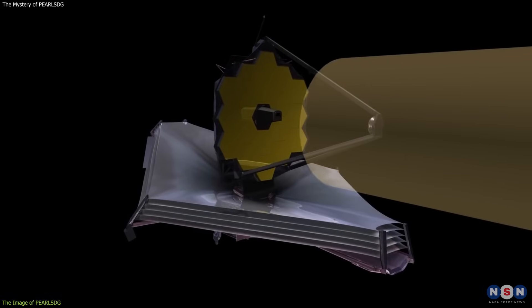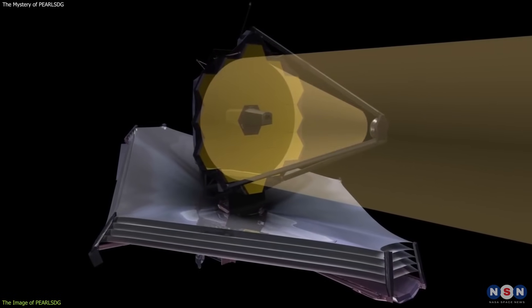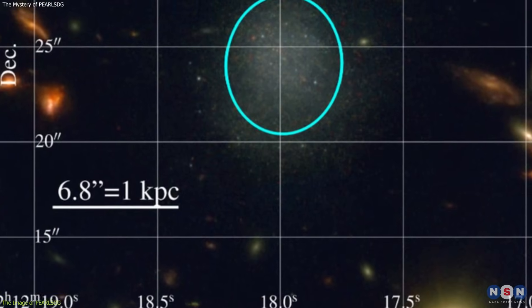These filters allow Webb to capture the light emitted by PEARLS DG and the surrounding galaxies, and to reveal their colors and features.